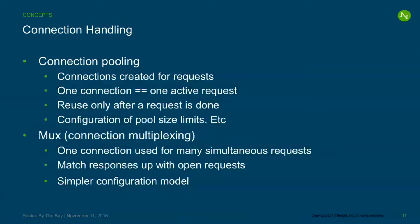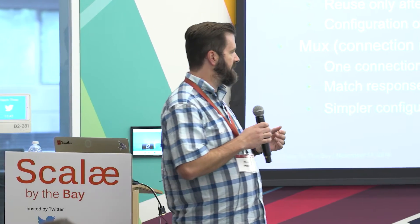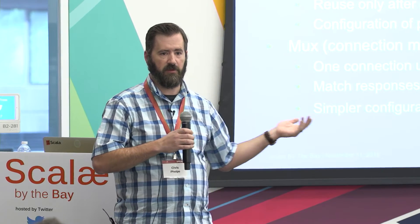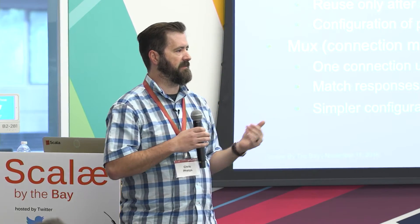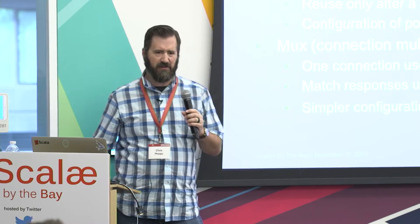Connection handling has two approaches: connection pooling and multiplexing. Connection pooling creates new connections for more requests, typically with only one open request per connection, reusing connections only after completing a request. Multiplexing — which Finagle implements in MUX — uses one connection shared for many simultaneous requests, with the complexity of matching responses back to their requests. Connection pooling has more configuration; MUX has a simpler model.